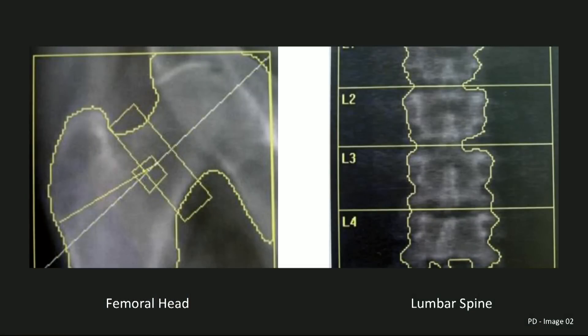Bone density calculation is performed by summing the bone signal within a region of interest. The regions of interest are either manually drawn or automatically computed using a pre-existing deformable model of the human bony anatomy. This bone density calculation is not expressed as a quantitative score due to differences between manufacturers. Instead, it is expressed as a Z-score from an age, sex, and sometimes ethnically matched average sample mean that is stored in the imaging instrument.